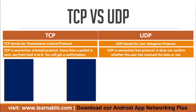TCP is a connection-oriented protocol. For example, in the popular application WhatsApp, whenever you send a message to a user and it is successfully delivered, you will get a double tick sign, which indicates that the message has been successfully reached to the destination.